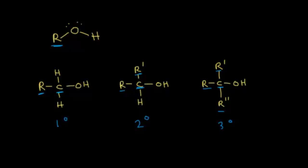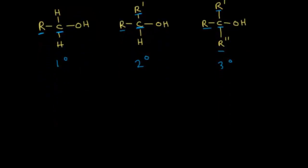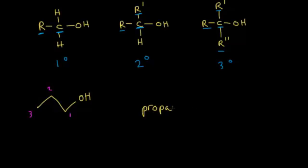Let's take a look at the nomenclature of alcohols, starting with some simple molecules. For a three-carbon chain, I want to number the chain to give the OH the lowest number possible, so carbon 1, 2, and 3. Without the OH we'd have propane, but since we have our OH, this is an alcohol with the '-ol' ending. The OH is on carbon 1, so this is called 1-propanol.